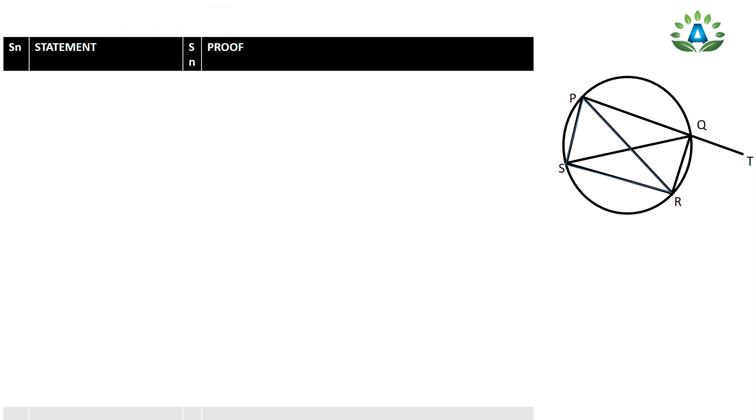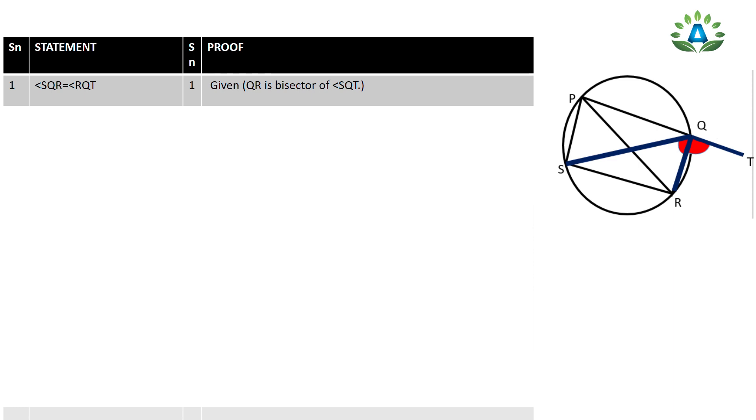Now let's start with the proof. Statement 1: QR is the bisector of angle SQT. This is given. Statement 2: Therefore, angle SQR equals angle RQT, since the bisector divides the angle into two equal angles.